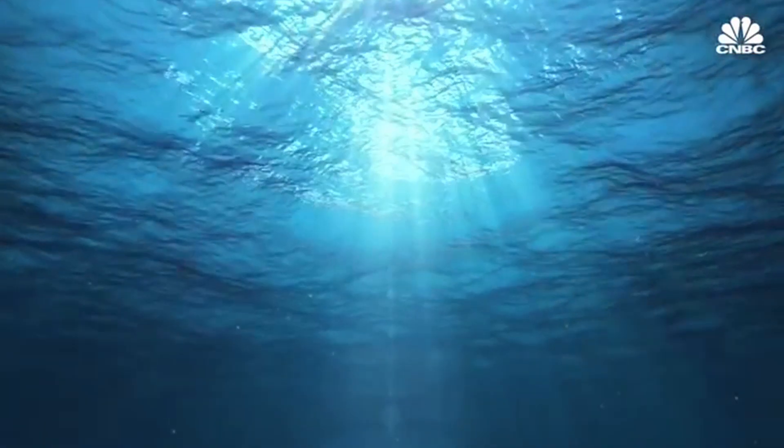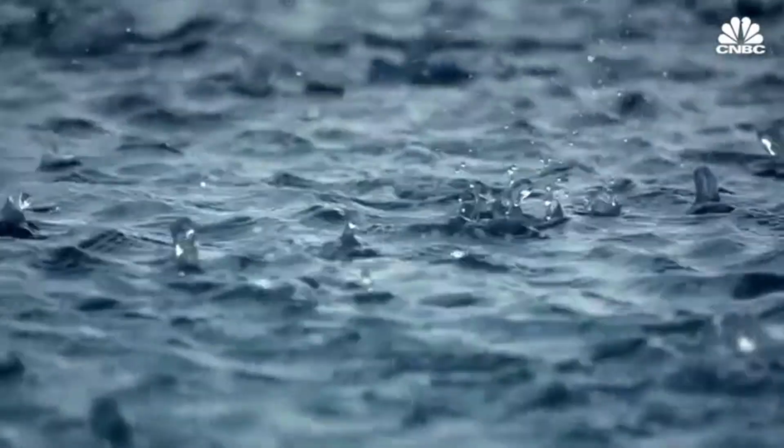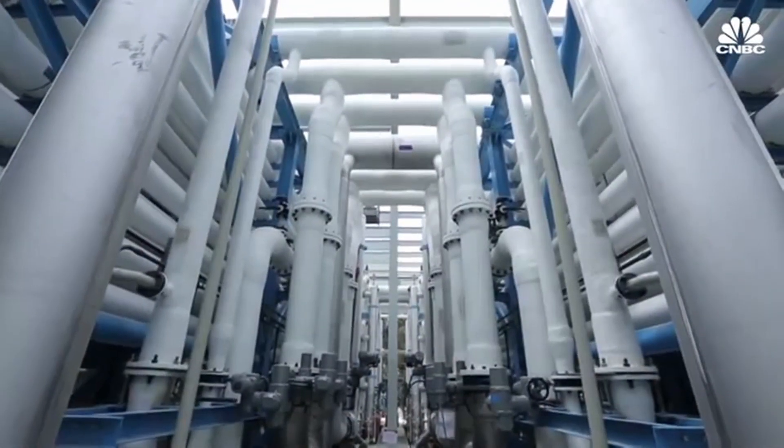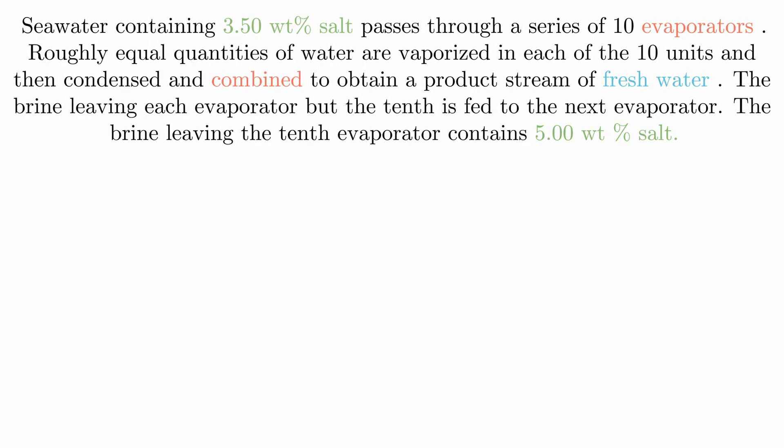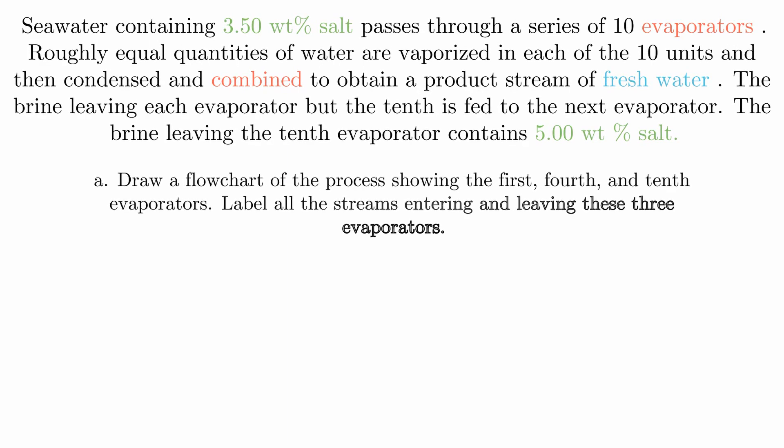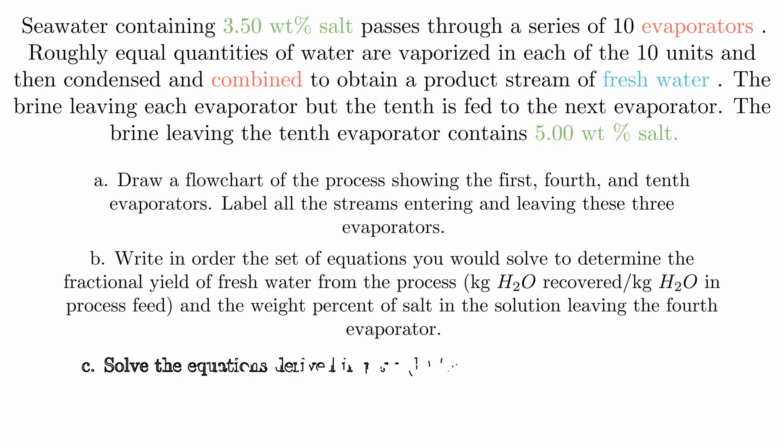In this example, we'll be doing a problem analyzing seawater content, desalination. Seawater containing 3.5 weight percent of salt passes through a series of 10 evaporators. Water is vaporized and condensed to obtain a product stream of freshwater. We are to draw and calculate the mass balance representing this system.